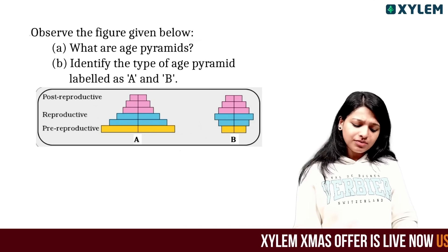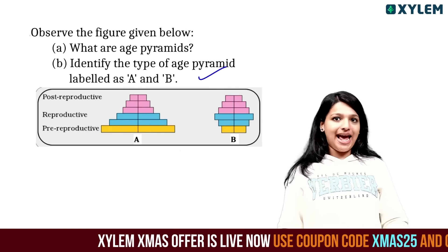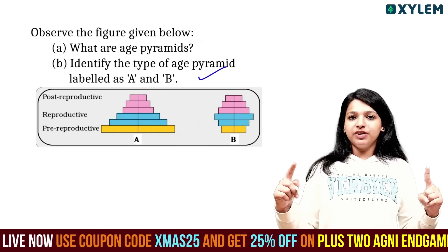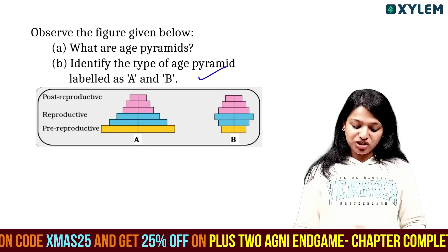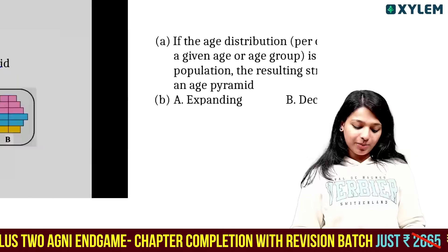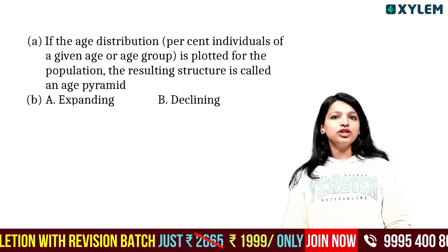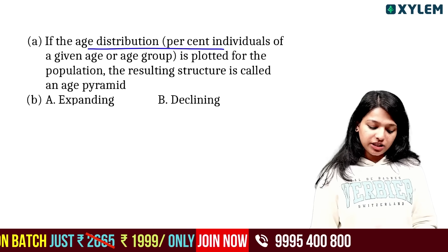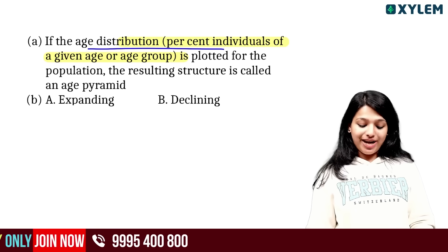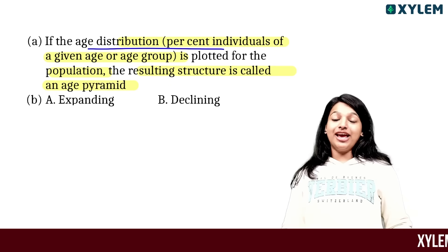What are the age pyramids? Identify the type of age pyramids labeled as A and B. A - we are sure to know that pre-reproductive expanding population. B - pre-reproductive declining population. Age pyramids show age distribution: percent of individuals of a given age or age group plotted for the population. The resulting structure is called age pyramids.